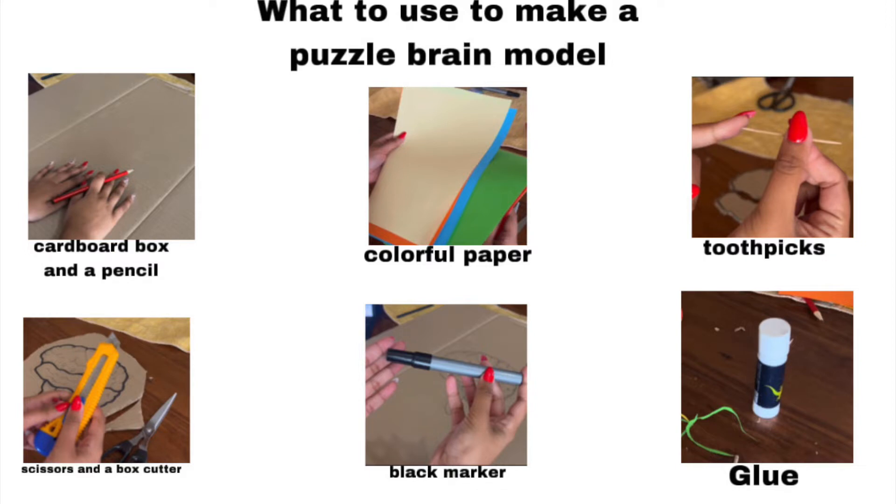What you will need to make a puzzle brain model is a cardboard box and a pencil, colorful paper, toothpicks, scissors and a box cutter, a black marker and glue.